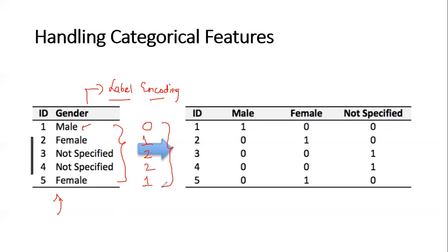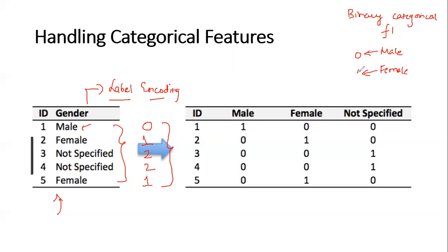This particular label encoding has a very big problem. Let us consider a binary category feature - suppose I have a feature F1 where my output is just male and female, only two different types of values. When I apply label encoding, this will get converted to new labels like 0 and 1. When I have just zeros and ones and pass it to a machine learning algorithm, it will be able to distinguish very easily because there are just two categories - one is zero and one is one. When the value is zero it considers male, when it is one it considers female.